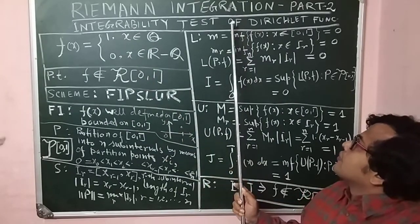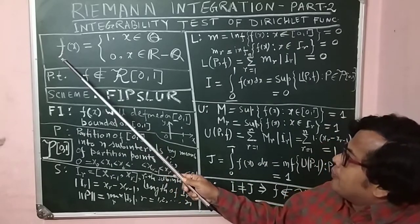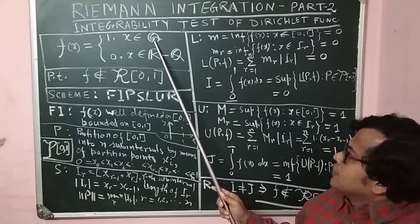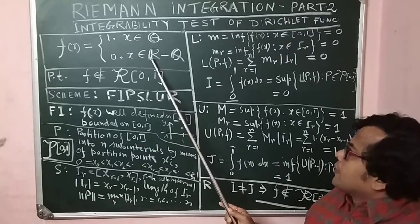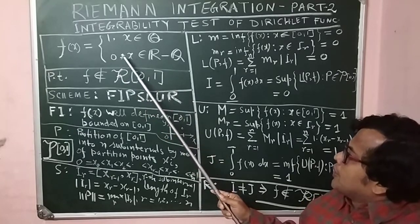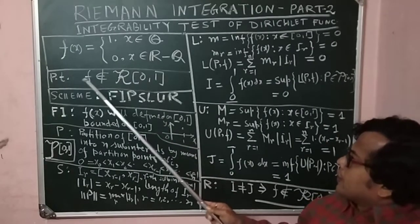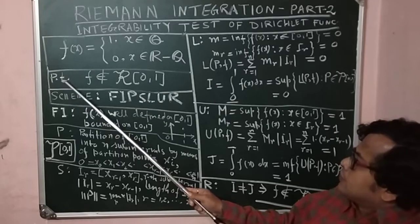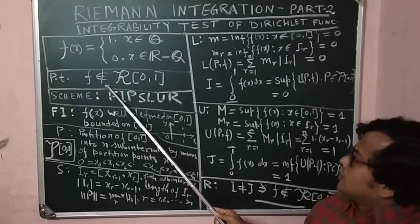Integrability test for the Dirichlet function. The Dirichlet function is defined by f(x) equal to 1 when x is rational, equal to 0 when x is irrational — that is, the irrationals are the complement of the rationals. We want to prove that f does not belong to R[a,b], meaning f is not Riemann integrable.